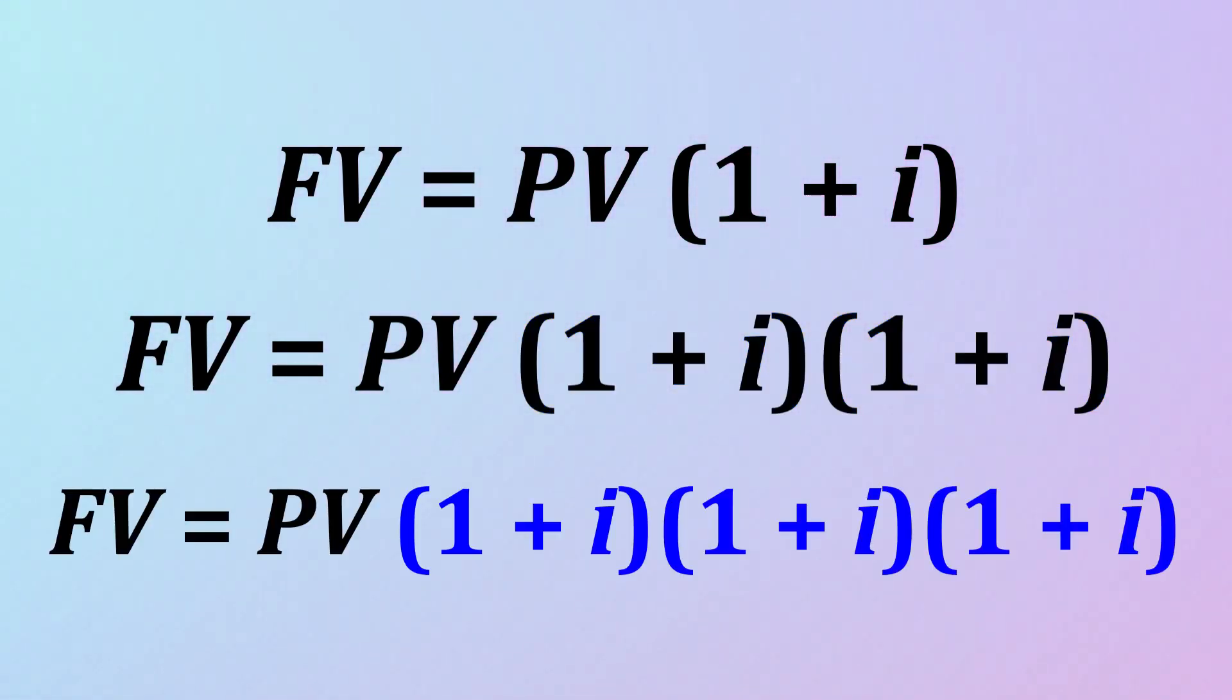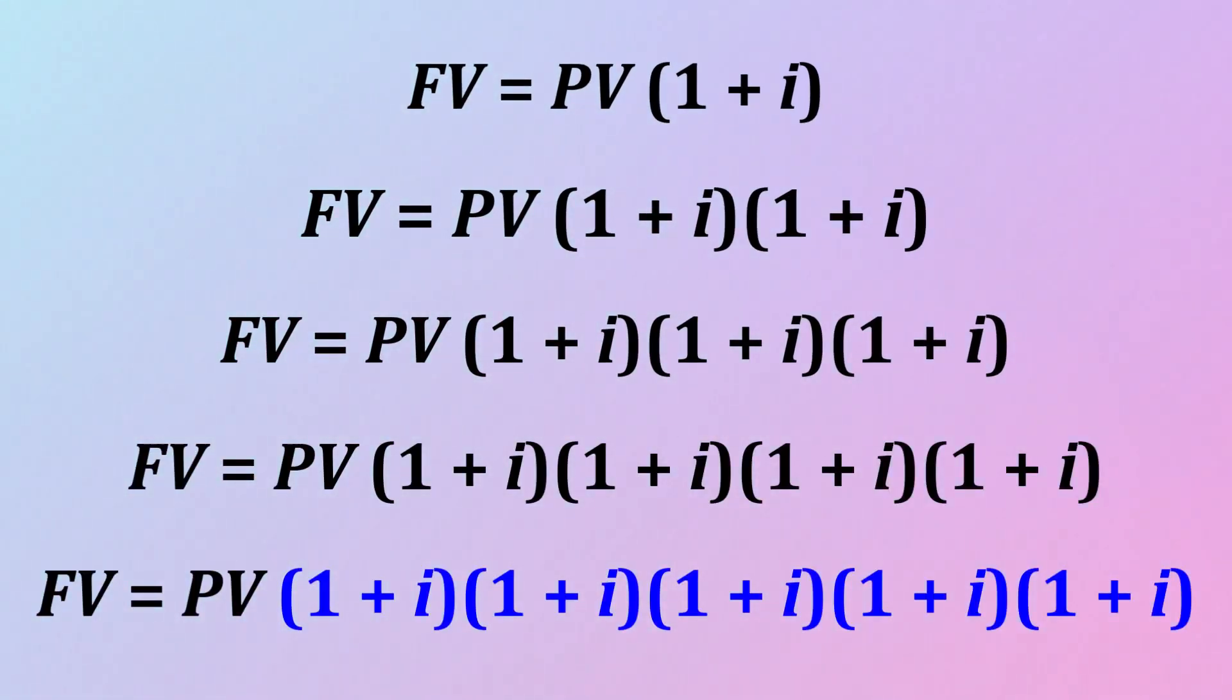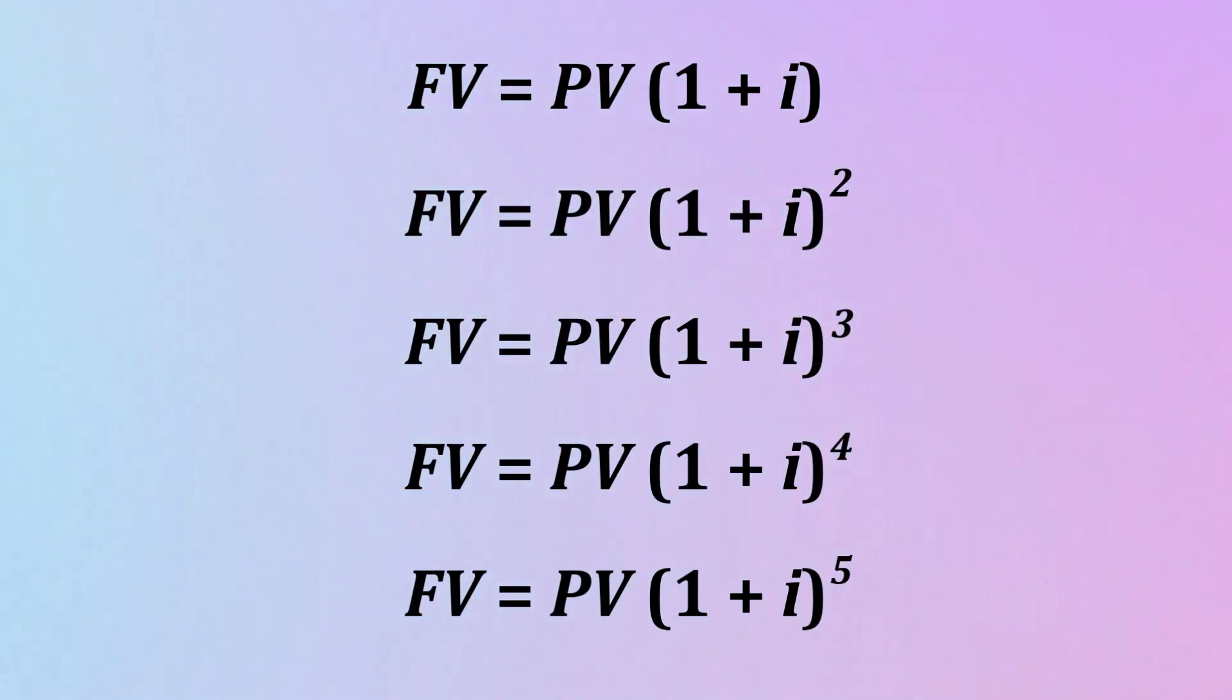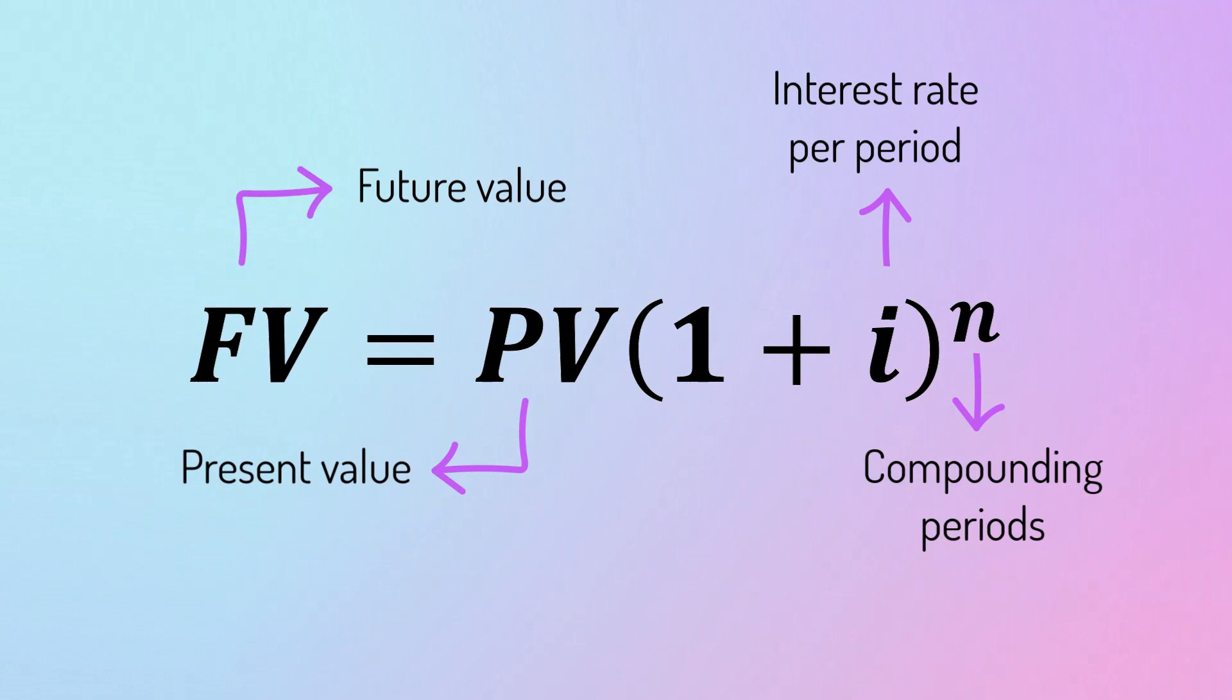Repeating this for a third period would lead to three factors of 1 plus I. After five years, the repetitions would eventually lead to five factors of 1 plus I, which corresponds to the number of compounding periods. We can shorten this by writing the equation in exponential form instead, where the exponent N represents the number of periods we choose to compound our initial investment.